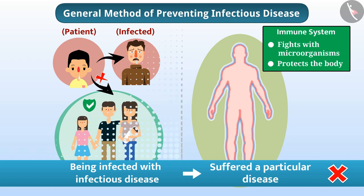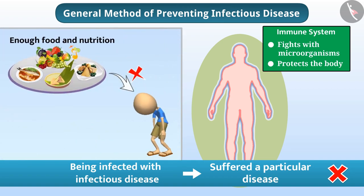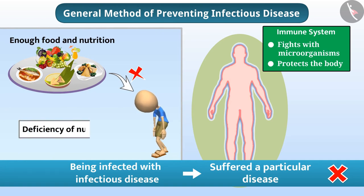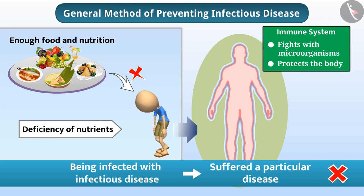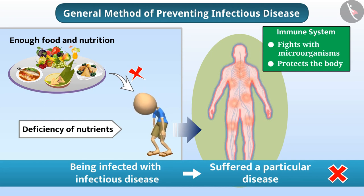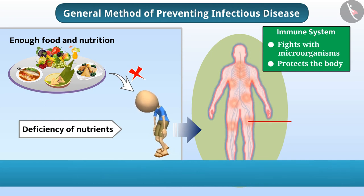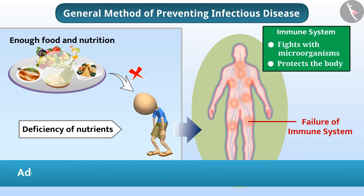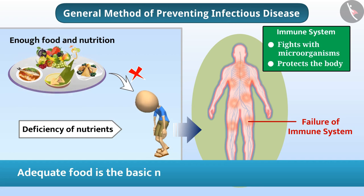But if one does not get enough food and nutrition, then there is a deficiency of nutrients in the body, due to which the immune system does not succeed in killing disease-causing microorganisms. Severe disease indicates failure of the immune system. That is why adequate food is the basic need to prevent infectious diseases.